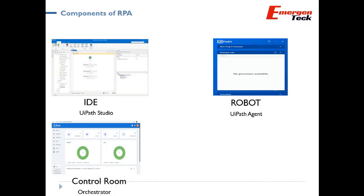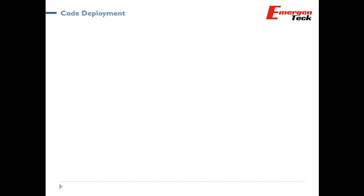The last component is the Control Room, which in UiPath is called Orchestrator. The Orchestrator is a component that monitors, controls, and deploys the bots. All three components are very important. Let's see how code deployment happens, which will help us logically connect everything.